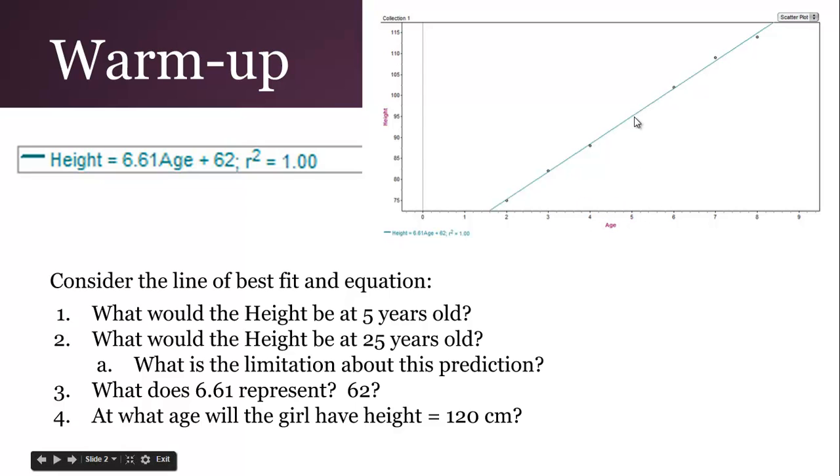You look at this, you've got 5 years old right here, you go to the line, we get a rough estimate. But certainly if we plug in 5, we get a better idea for the height. What would the height be at 25 years old? Outside of the data, if we plug in an age of 25, you get an idea for the height.